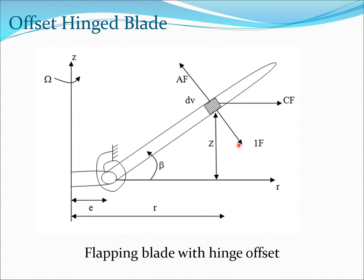This is the basic free body diagram of the flapping blade with an offset hinge. What is different from the flapping blade with the hinge at the root is the presence of e, and we will see that has an impact on the moment arms — because now the moment will be taken around this hinge point — and also on some of the forces themselves.